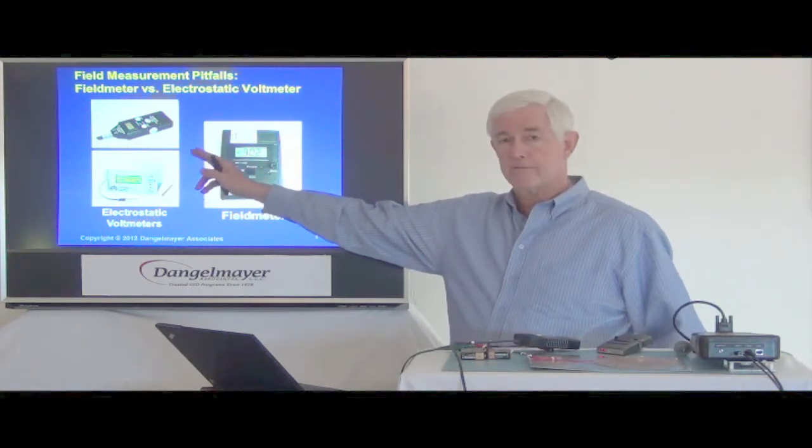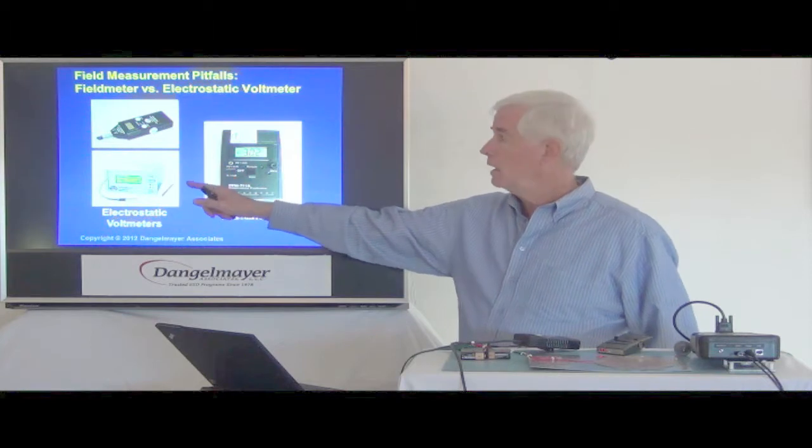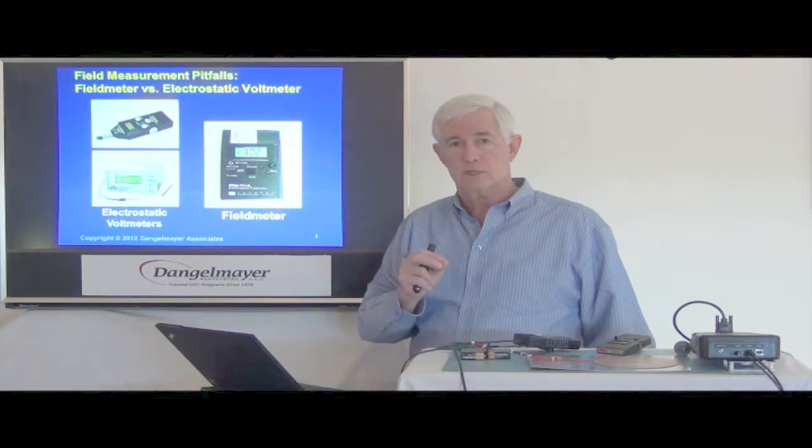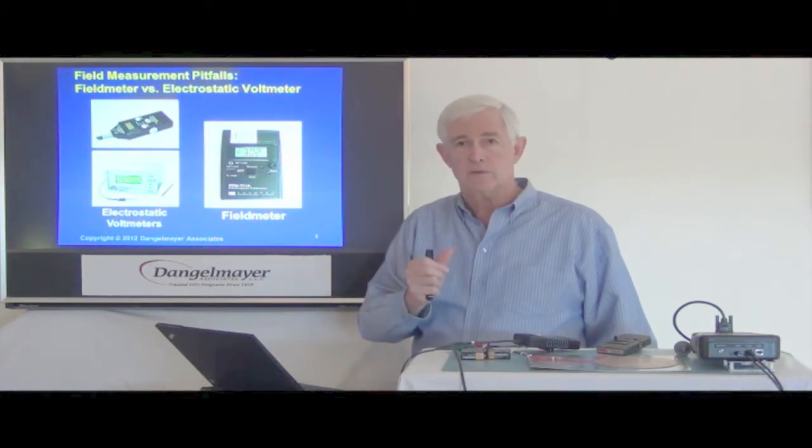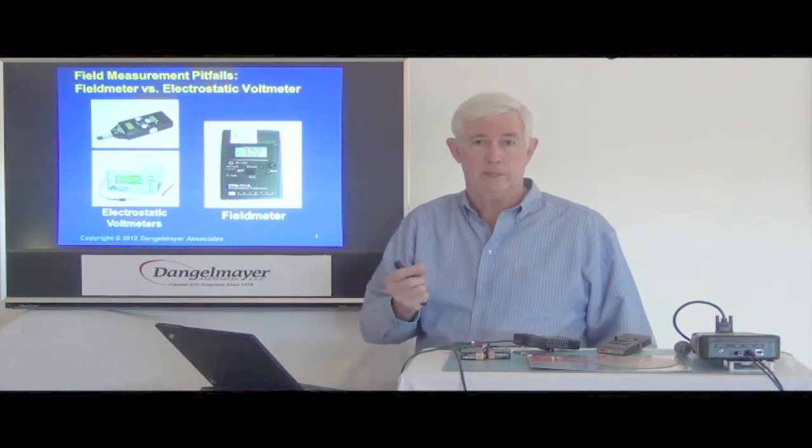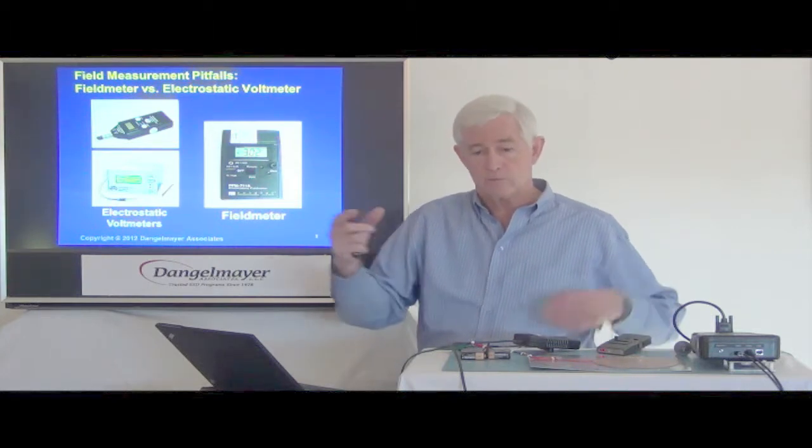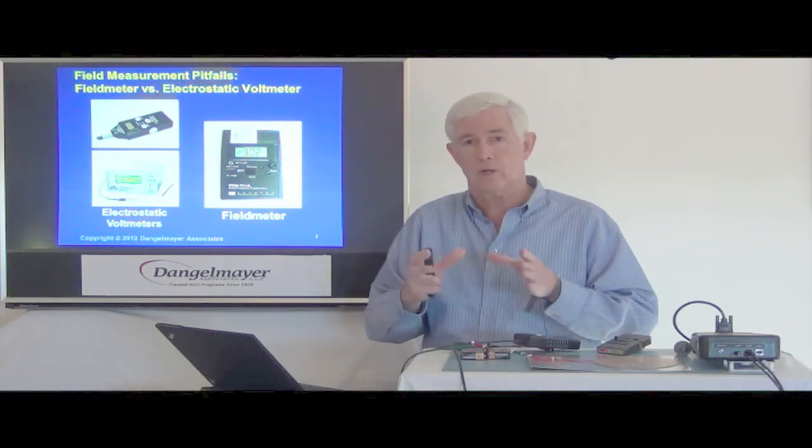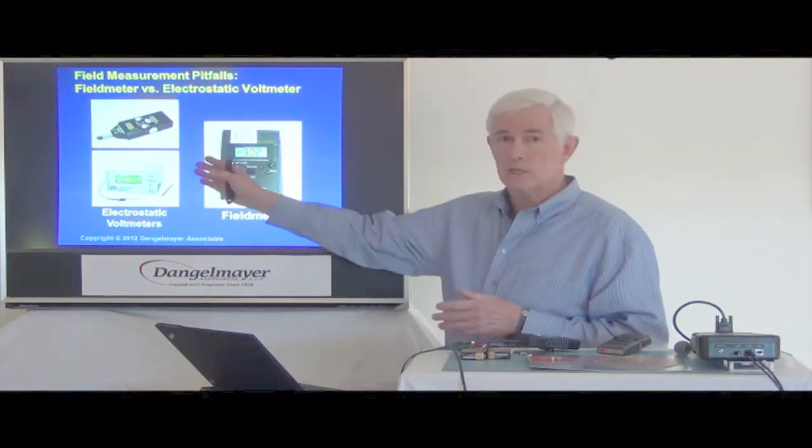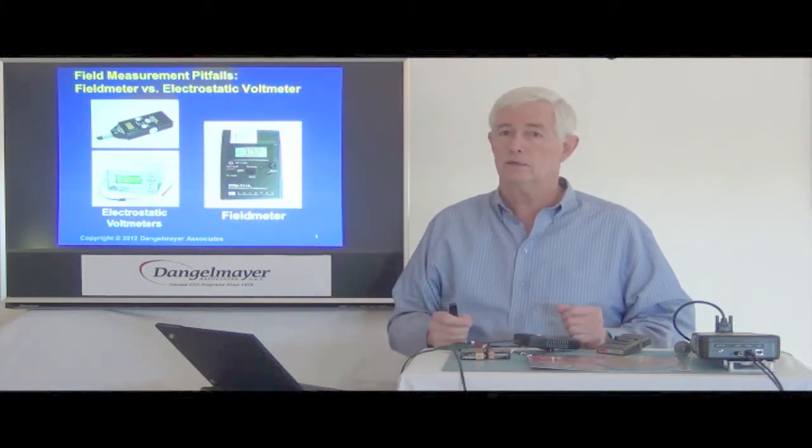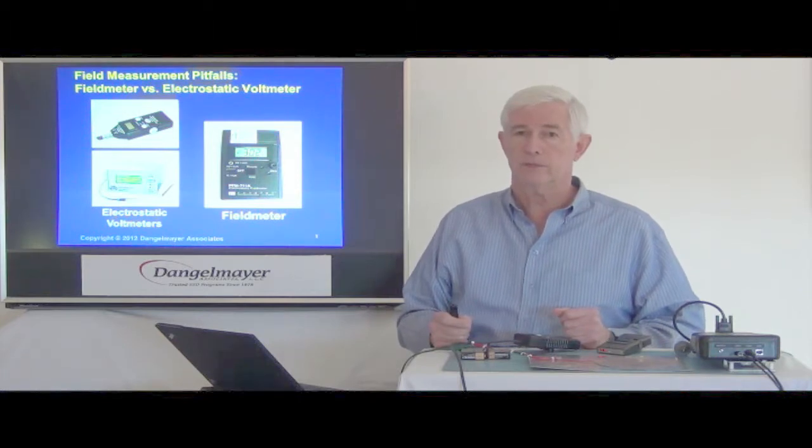The electrostatic voltmeter, on the other hand, can be set to make measurements at a much closer distance. The rule of thumb of four to one still applies, but the spacing for the recommended distance on the measurement can be down to just three to five millimeters. So that reduces the field of view and gives you more accurate measurements on smaller objects. Very important distinction, and typically the electrostatic voltmeters are not well known, and yet they're a very powerful tool to have in your kit.